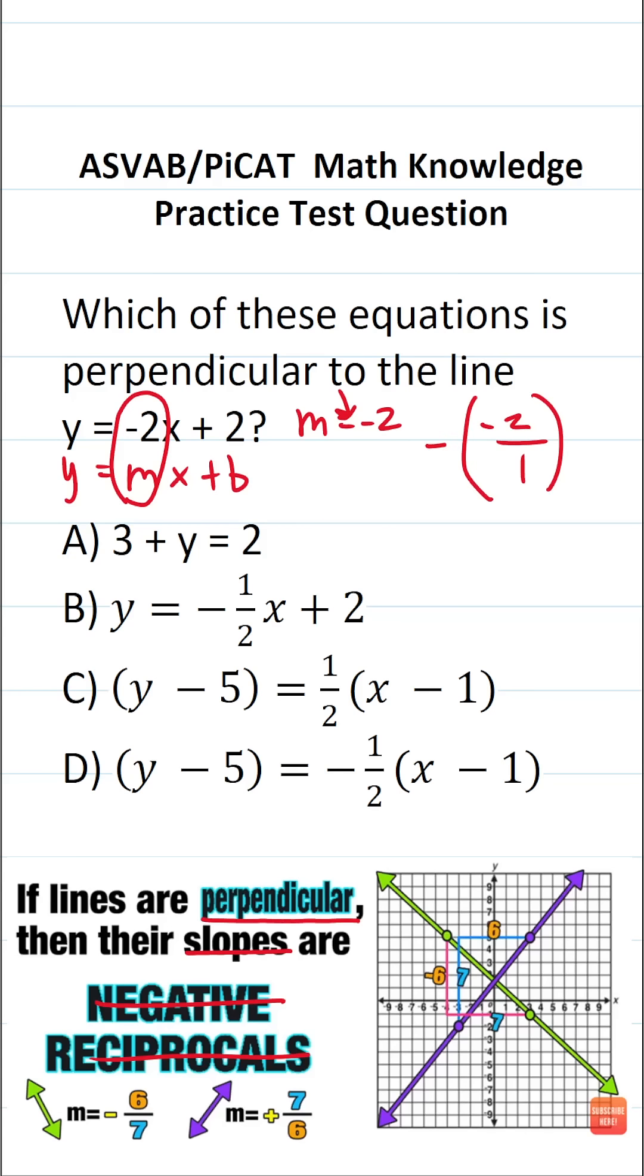So now we've got to find the reciprocal of negative 2 over 1. That's simply going to be flip-flopping our numerator and denominator. So that's going to be negative 1 over 2. A negative times a negative is a positive. So the slope of our perpendicular line is going to be 1 half.